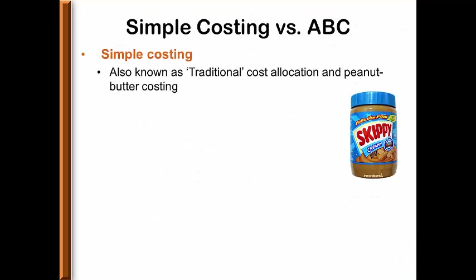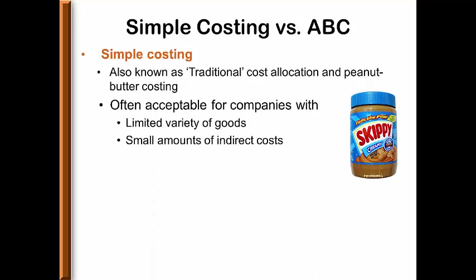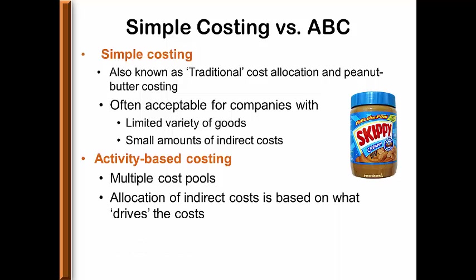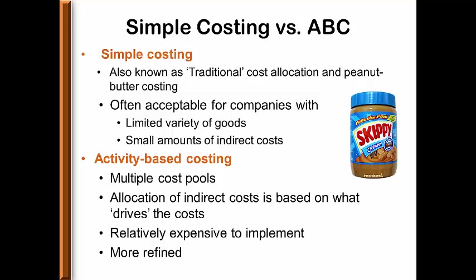Simple costing is sometimes known as peanut butter costing, in addition to traditional costing. Simple costing implies that this approach is easy, and it's often acceptable for companies with a limited variety of goods or companies that have very little indirect cost. Activity-based costing is for companies with multiple cost pools. It allocates indirect cost based on what drives the cost, is relatively expensive to implement, but is more refined and product costs are more accurate.